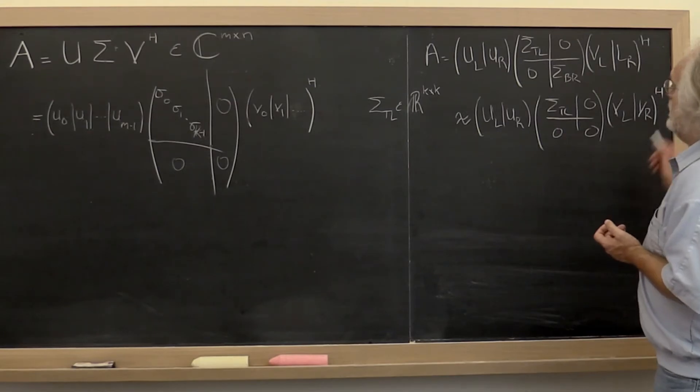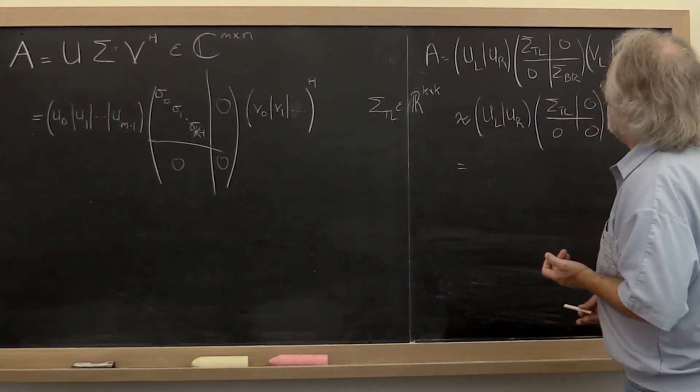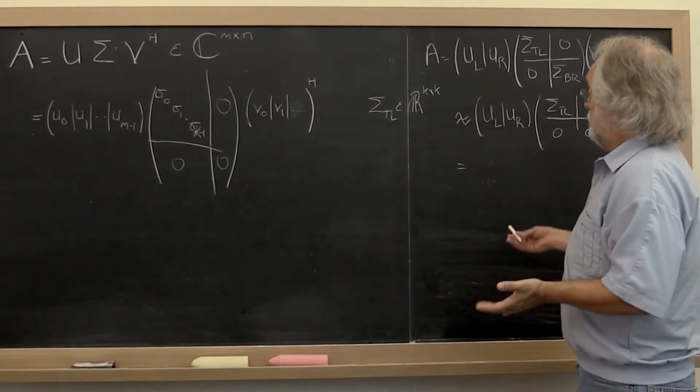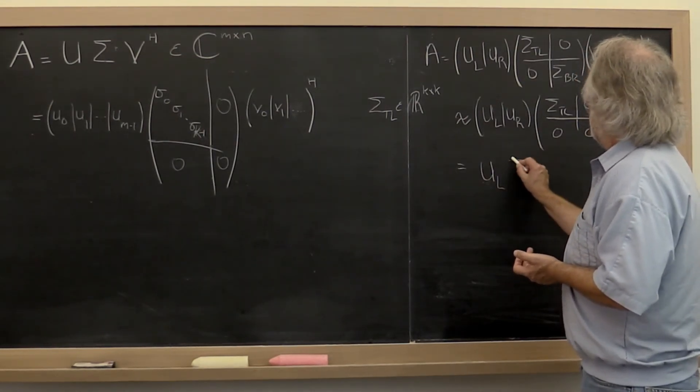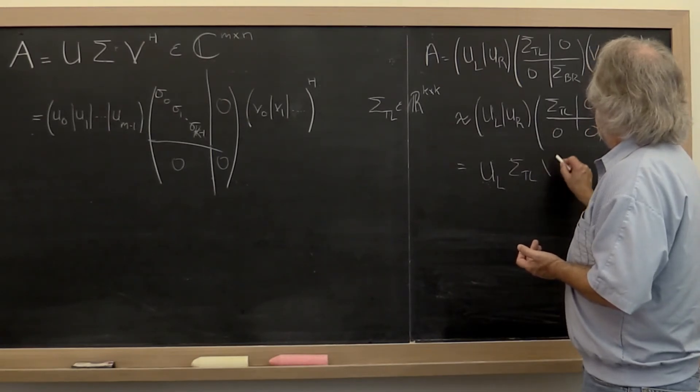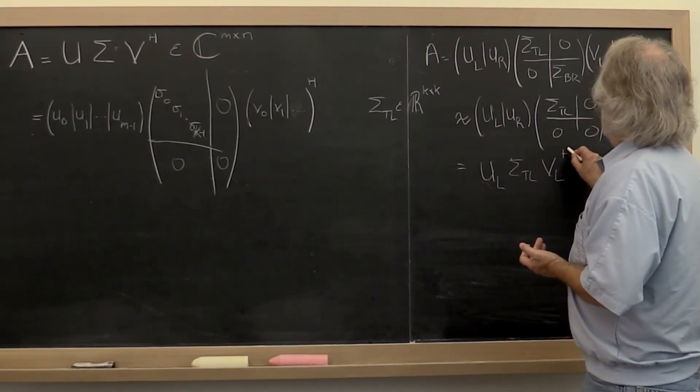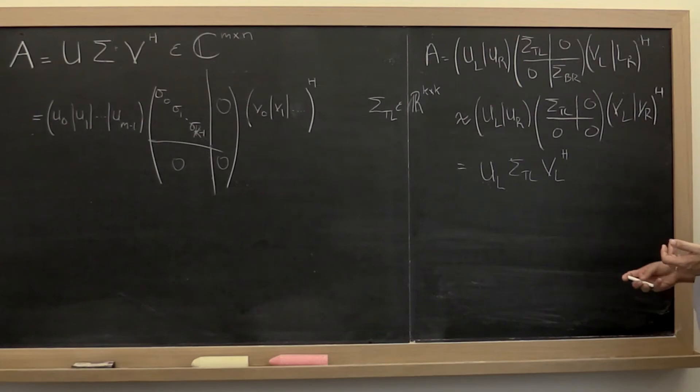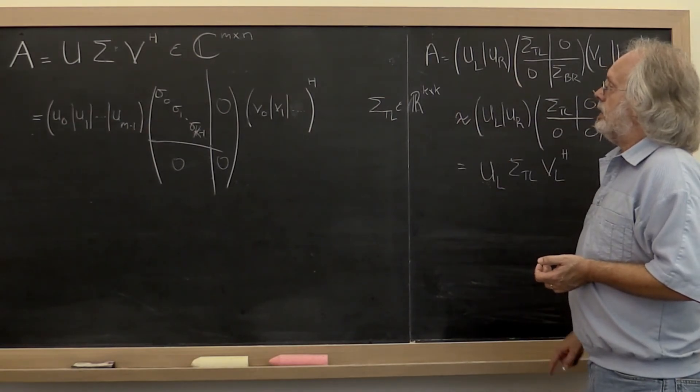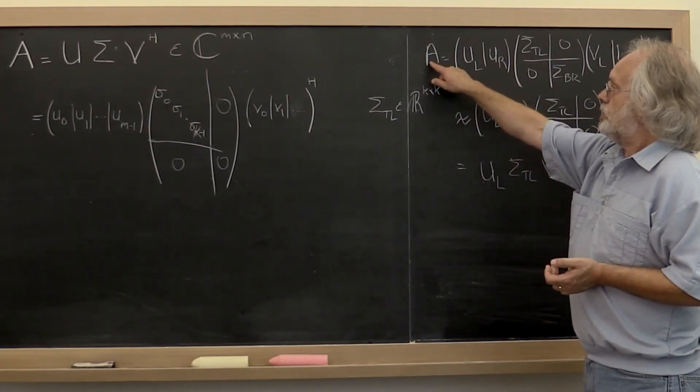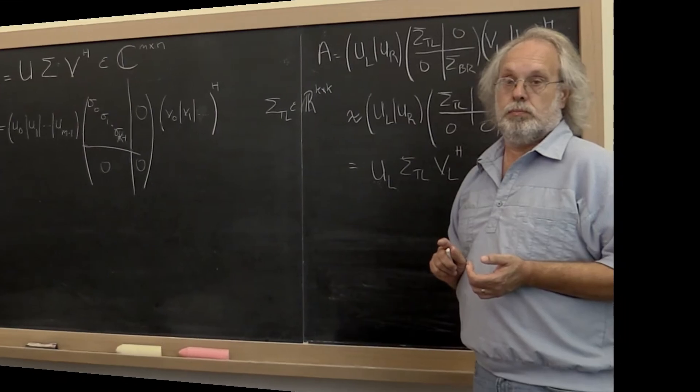which then gives us an approximate reduced singular value decomposition: U_left sigma_top_left V_left Hermitian transpose. And this matrix right here is the matrix of rank k that is closest to the original matrix A.